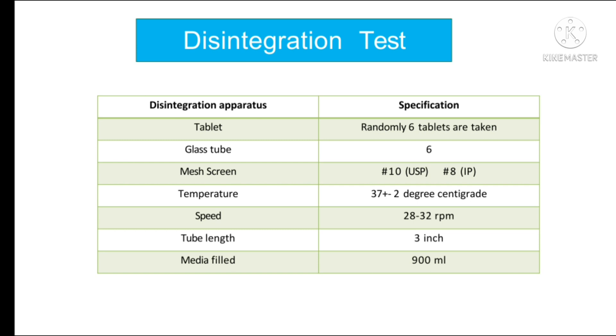The apparatus consists of a basket rack assembly, a one liter beaker, a thermostatic arrangement for heating the fluid, and a mechanical device for raising and lowering the basket in the immersion fluid at a constant frequency rate.